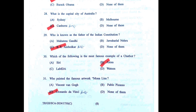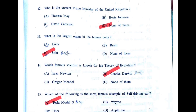Question 31: Who painted the Mona Lisa? — Leonardo da Vinci, very easy. Question 32: Who is the current Prime Minister of the United Kingdom? Not Boris Johnson, not David Cameron, not Theresa May — possibly option D. Question 33: What is the largest organ in the human body? — Skin. Question 34: Which famous scientist is known for the theory of evolution? — Charles Darwin. Question 35: Most famous example of a self-driving car — Tesla Model, developed by Elon Musk.